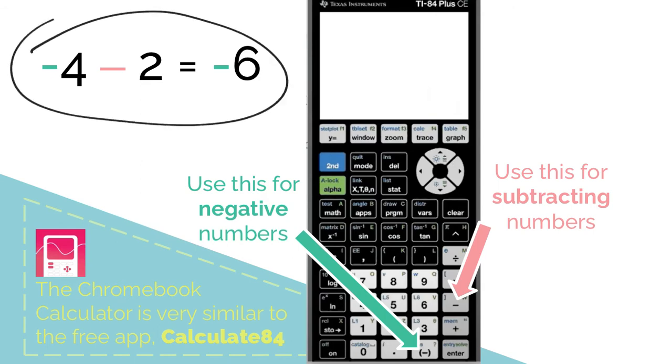Now go ahead and plug this into your calculator and see what you get. Make sure you have used the negative in front of your four and the subtraction in front of the two. You should get your answer as negative six. Remember to use the enter button for your equal sign.